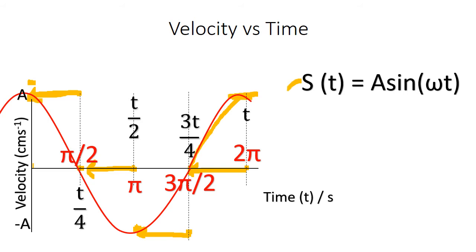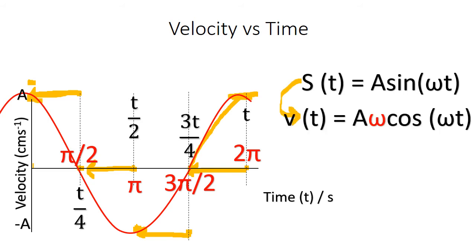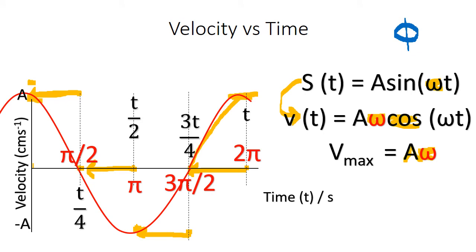Velocity is the time derivative of displacement. So I take the displacement and derive it with respect to time. The derivative of sine is cosine, and I multiply by the derivative of what's inside the trig function — the derivative of omega t is omega. Omega is the angular frequency. The maximum velocity can be calculated by multiplying the amplitude by the angular frequency. I'm not including the phi symbol, which denotes a phase shift right at the start of the graph — I'm leaving it off for simplicity, but you might see it later in college.